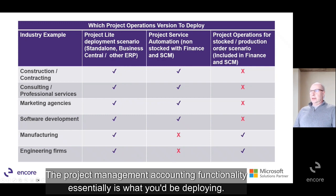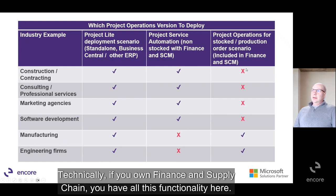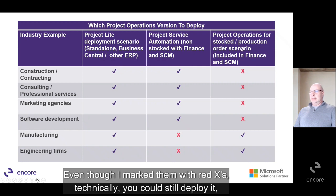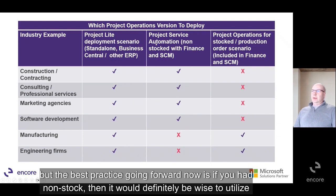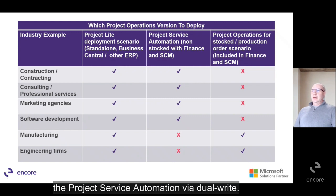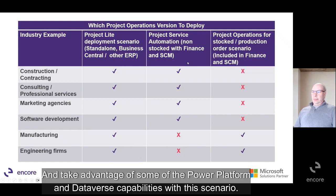If you do have stocked inventory, you'll need to go to Project Operations for the stock/production order scenario. Manufacturing and engineering firms typically land here — they produce a product and carry stocked inventory — so that falls inside Finance and Supply Chain as the Project Management Accounting functionality. Technically, if you own Finance and Supply Chain, you have all this functionality. But best practice going forward for non-stocked scenarios is to utilize Project Service Automation via dual write and take advantage of Power Platform and Dataverse capabilities.